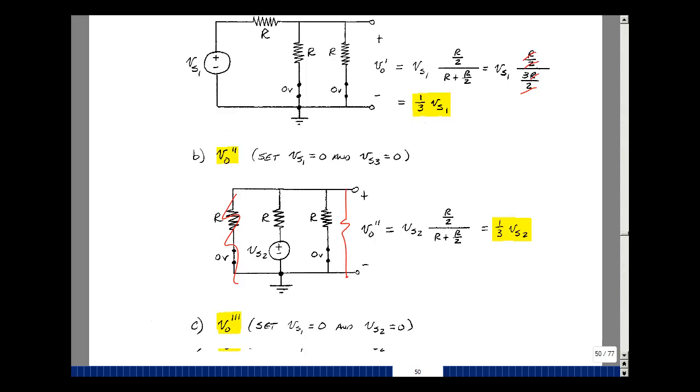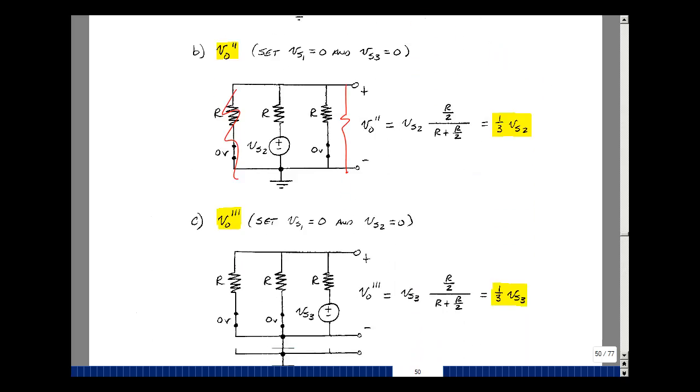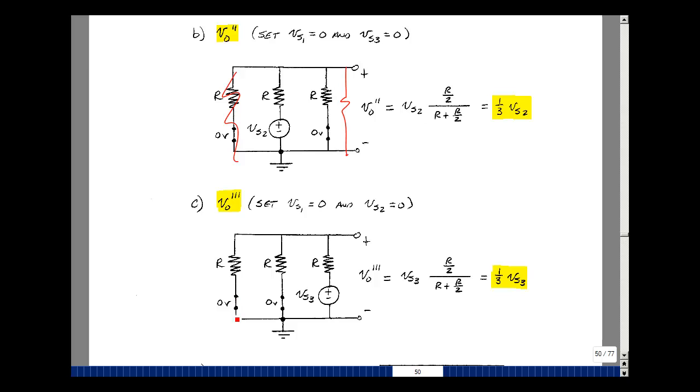Lastly, let's do the third source as our input and set the other two sources equal to 0. I've got two resistors in parallel, so I get R over 2, and that's a voltage divider across here, which is Vout. This is due to the third source. That's going to voltage divide with R, so R plus R over 2. And that's 1 third V sub S3.